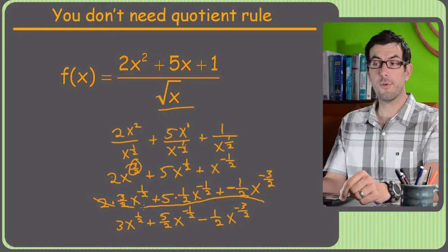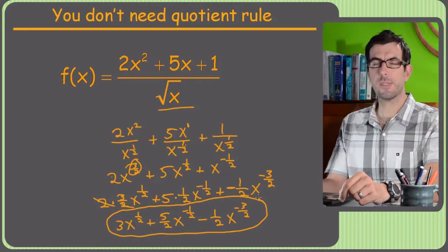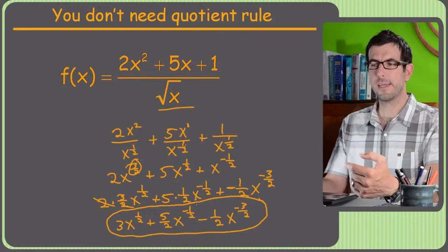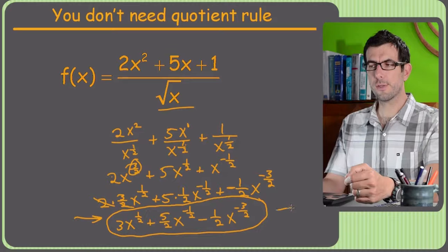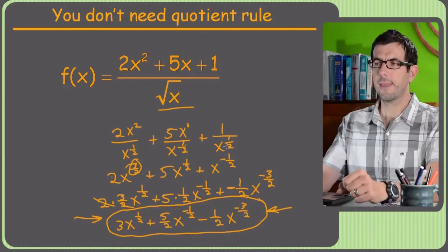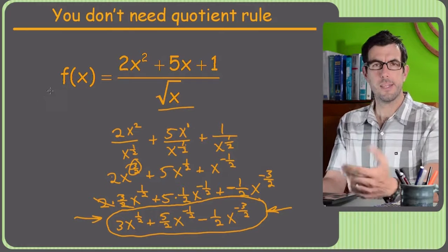What did we really save ourselves? Well, try this with a quotient rule and get back to me. You will think that this looks like a walk in the park compared to what would have happened with a quotient rule. And there's one last problem that sort of goes in the same vein, you know, what can you cancel?